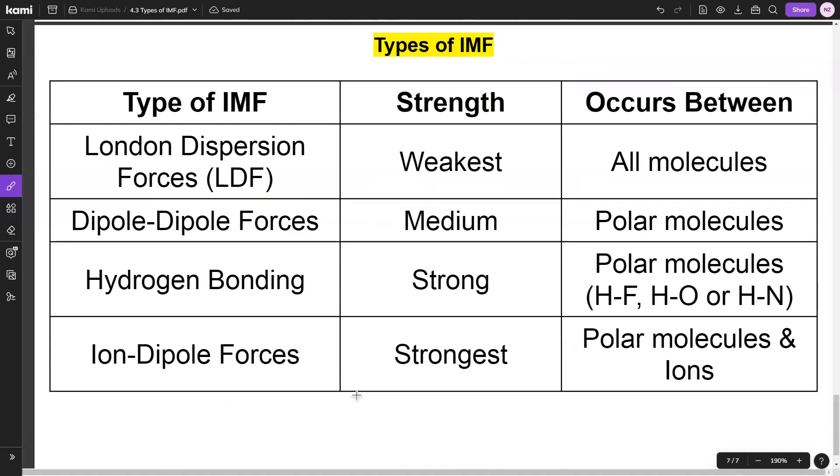To summarize, these are the four intermolecular forces: London dispersion, dipole-dipole, hydrogen bonding, and ion-dipole. Let me differentiate between these. London dispersion occurs in all molecules—a key thing to remember is that this is the only type of IMF present in non-polar molecules.